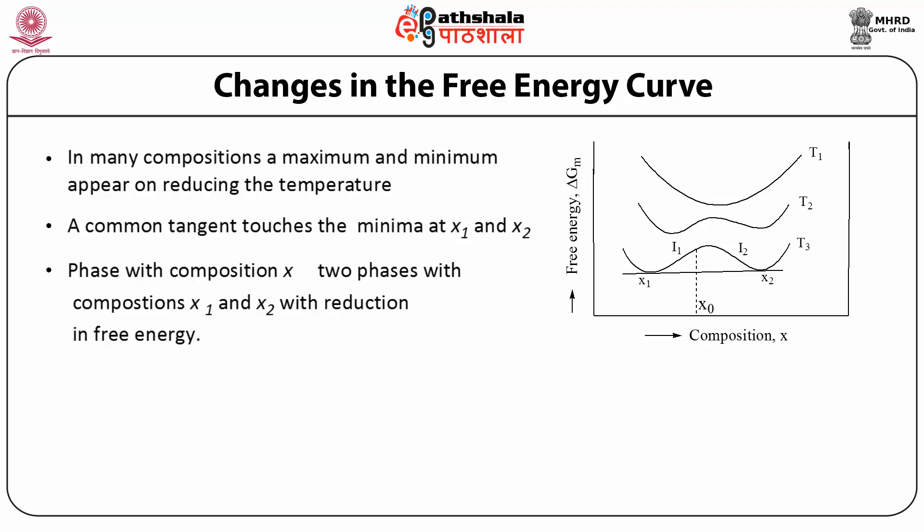Below this temperature T3 — where T3 is the consolute temperature or upper critical temperature — a common tangent can be drawn to the two minima. The tangent touches the minima at compositions x1 and x2.